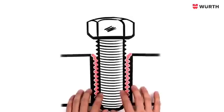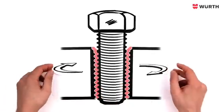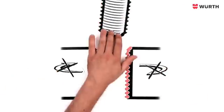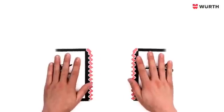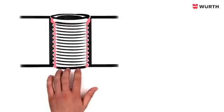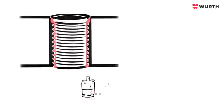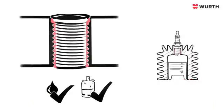This ensures that the insert cannot come loose when the screw is removed. This particularly sturdy connection also means that TimeSert is gas- and watertight. It can therefore also be used for spark plug threads, for example.